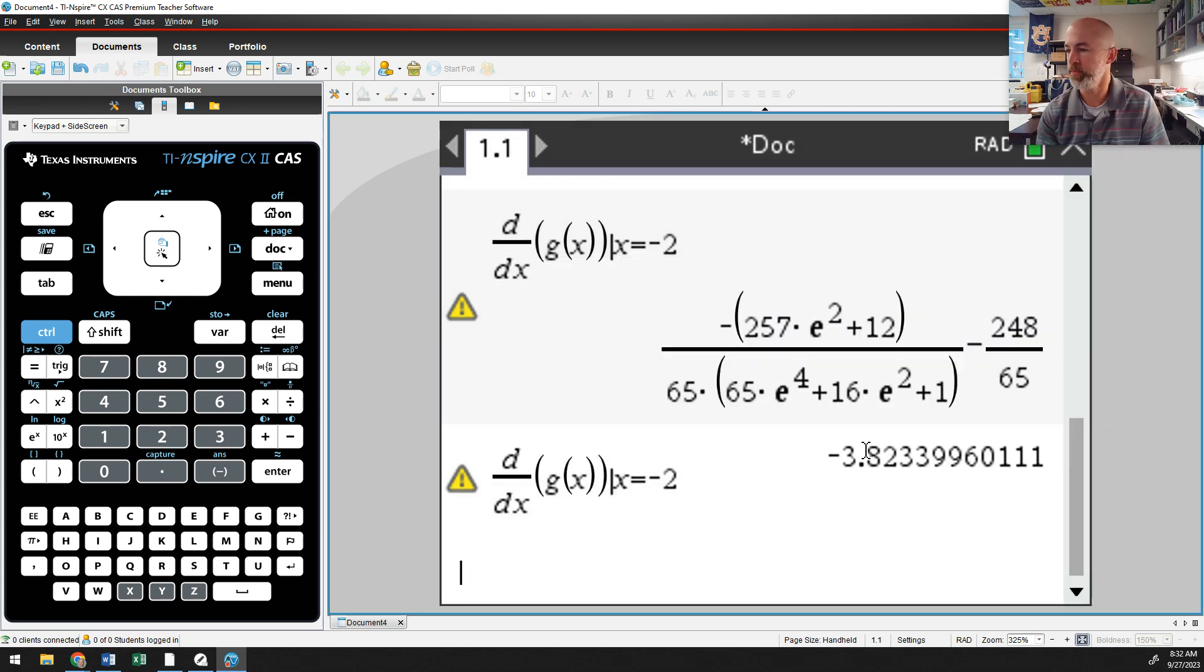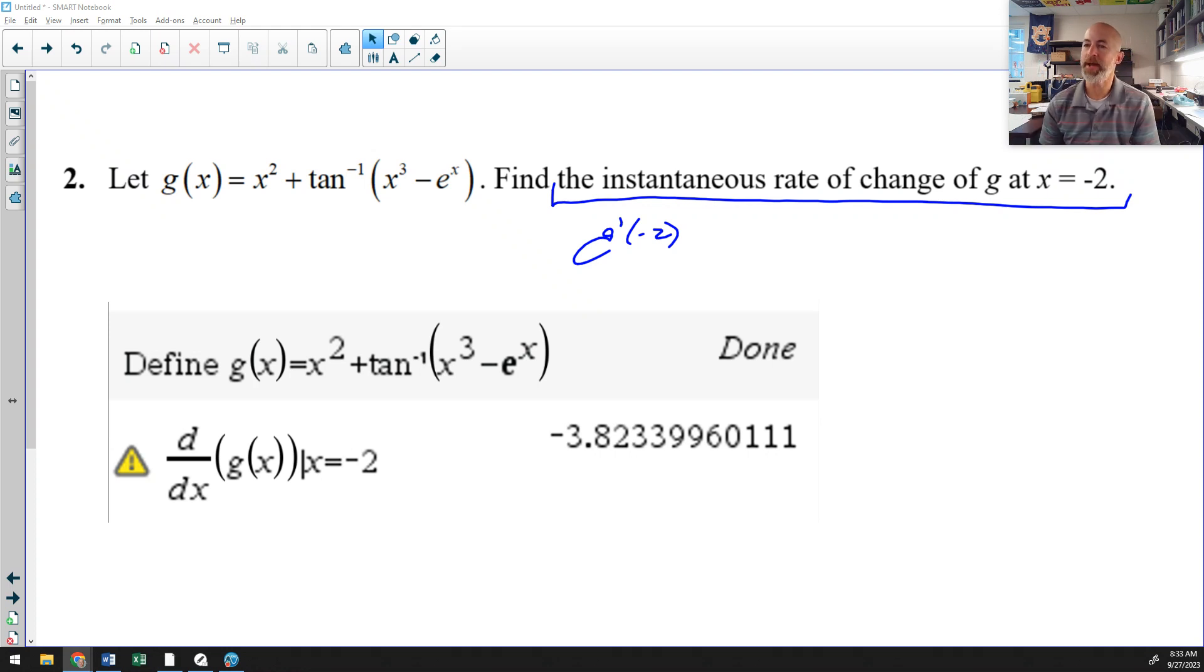And for this problem, the answer would be negative 3.823. And this time there is no rounding. There is no rounding options as far as truncating versus rounding up. And so back to the problem, I would simply now write that g prime of negative 2 is negative 3.823. And you are done.